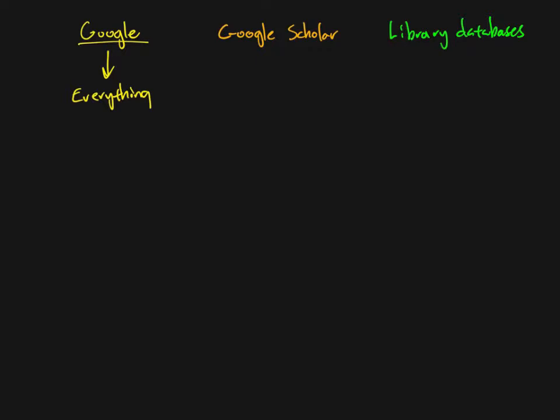Google is going to give you web pages published by universities that have very accurate or reliable information some of the time, and it's going to give you pages with pseudoscience — stuff that looks really good but if you check into it there's no research to actually support it. It's going to give you news and it's going to give you fake news: sites that look like they're reporting legitimate authentic news but it's completely fabricated, deliberately fabricated in order to make the authors money.